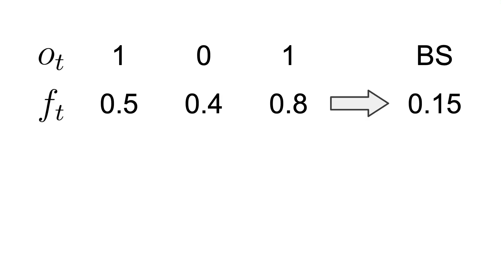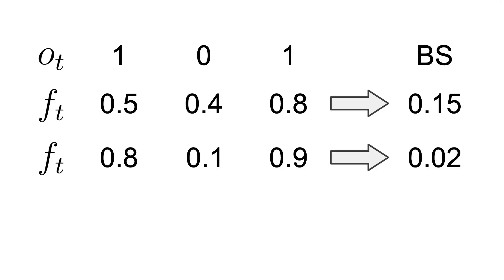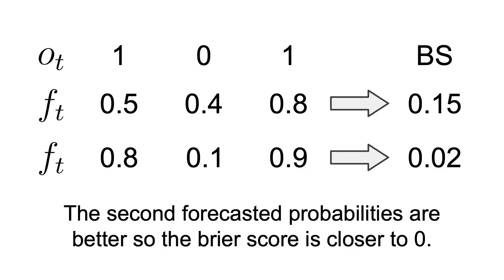If we take another model that predicts the following probabilities for our data, then our Brier score improves and we get 0.02. So this is also reflected in the final Brier score, which is closer to zero. In general, a perfect prediction would give us a Brier score of zero, while a completely mismatching prediction would give us a Brier score of 1. The closer our probabilities are to the real labels, the closer the Brier score will be to 0; and the further they are, the closer it will be to 1.